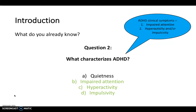The answer is B, C, and D. ADHD has two sets of symptoms: the first is impaired attention, which is the 'AD' part of the name, and the second is hyperactivity or impulsivity, the 'HD' part. Quietness was included as a distractor — children with ADHD are the opposite; they are noisy, talk excessively, have trouble playing quietly, and often interrupt others.